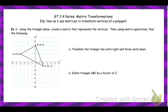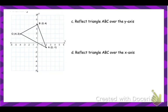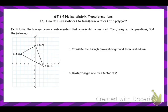The first thing we need to do is take a shape and its vertices and create a matrix from it. Looking at this triangle, I'm going to create a matrix where the top row is all the X coordinates and the bottom row is all the Y coordinates — so this will have two rows. The matrix representing this triangle is: 2, negative 1, 0 in the top row and 4, negative 4, 2 in the bottom row.